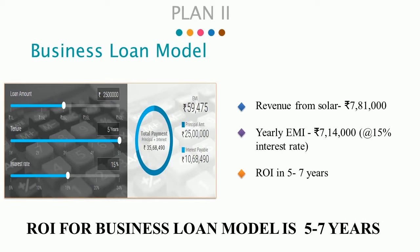Plan 2: Applying for a Business Loan. In this plan the owner applies and gets a business loan for the 50kW solar setup. Banks usually charge 13 to 15% interest rate on these loans, so the monthly EMI is around ₹60,000 for 5 years. The only downside is that the ROI is 5 to 7 years depending on the loan tenure.